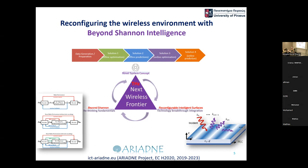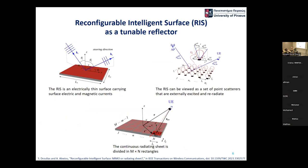I'll show a diagram we used five or more years ago in the Ariadne project to describe our initial take on RIS. We were a bit early compared to the ITU diagram. We wanted to combine three pillars: the first was the RIS technology enabler; the second was the design of wireless transceivers incorporating tunability — what we call 'beyond channel' because the channel itself is now part of the design; and the third was machine learning to optimize and make tunability an integral part of the design.